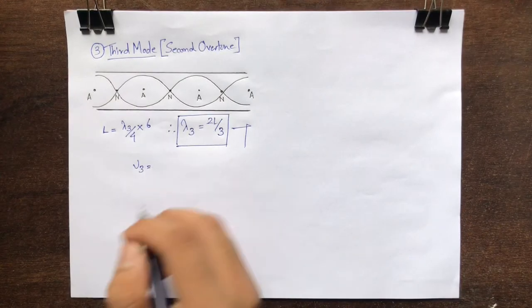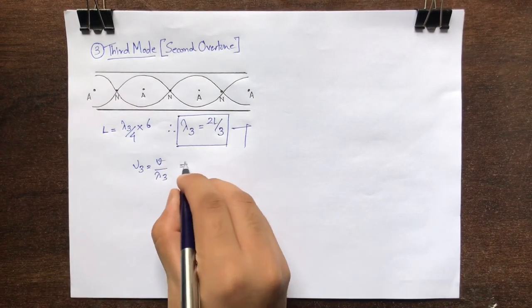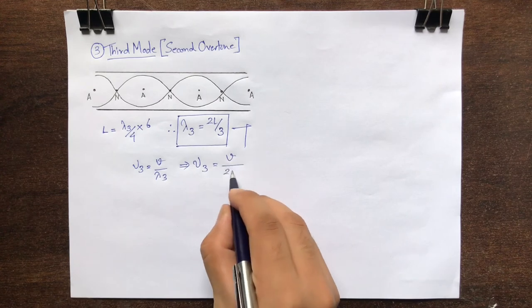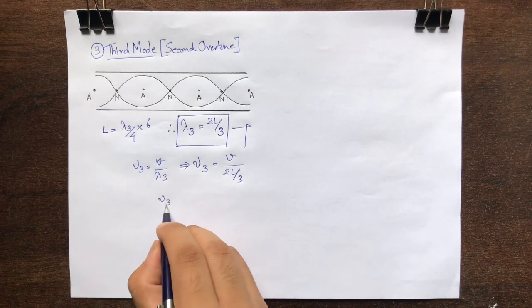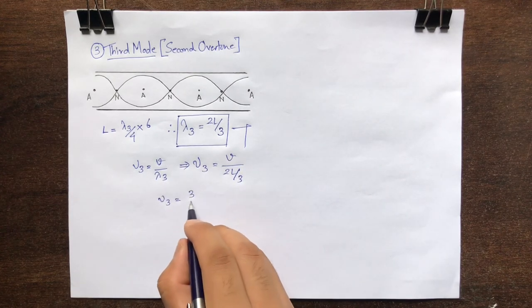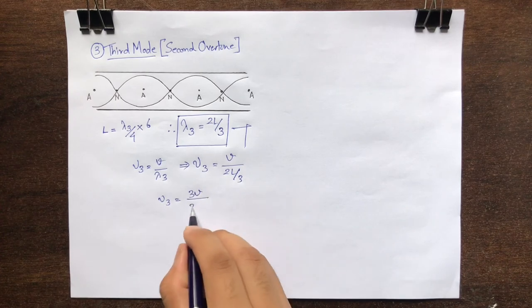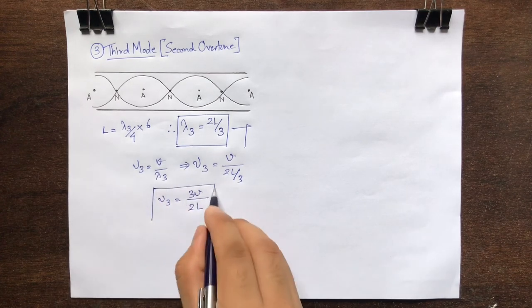Therefore, mu3 is equal to v upon lambda 3, that is 3v upon 2L. Mark it as equation 3.